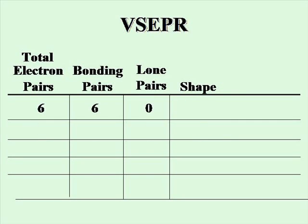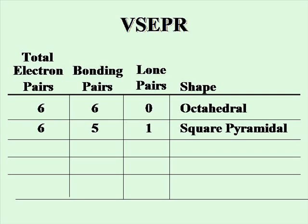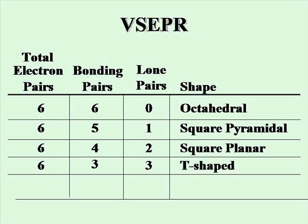Working with six total electron pairs, all six bonded with no lone pairs, gives you an octahedral molecular geometry. Six electron pairs, five bonded and one lone pair, will give you square pyramidal molecular geometry. Six total electron pairs, four bonded and two lone pairs, will give you square planar molecular geometry. Six electron pairs, three bonded and three lone pairs, will give you a T-shaped molecular geometry. And six total electron pairs with two bonding pairs and four lone pairs will give you a linear molecular geometry.